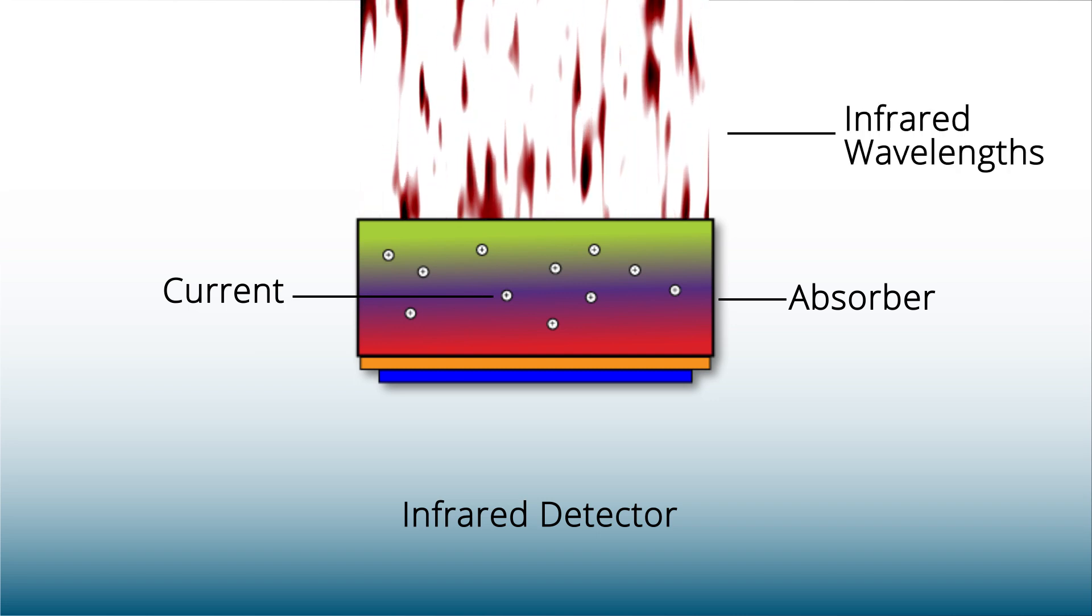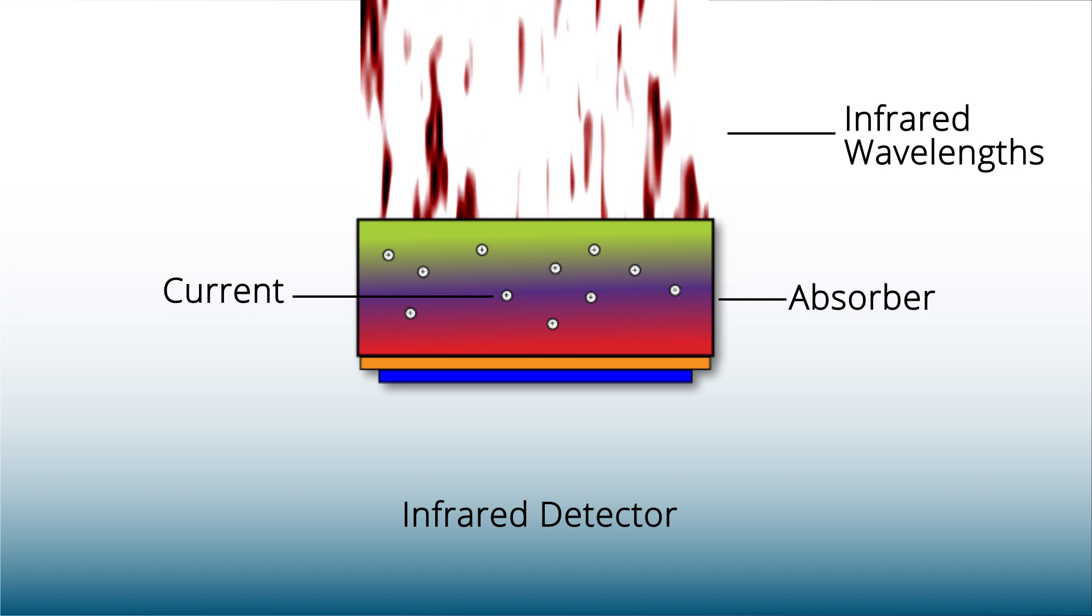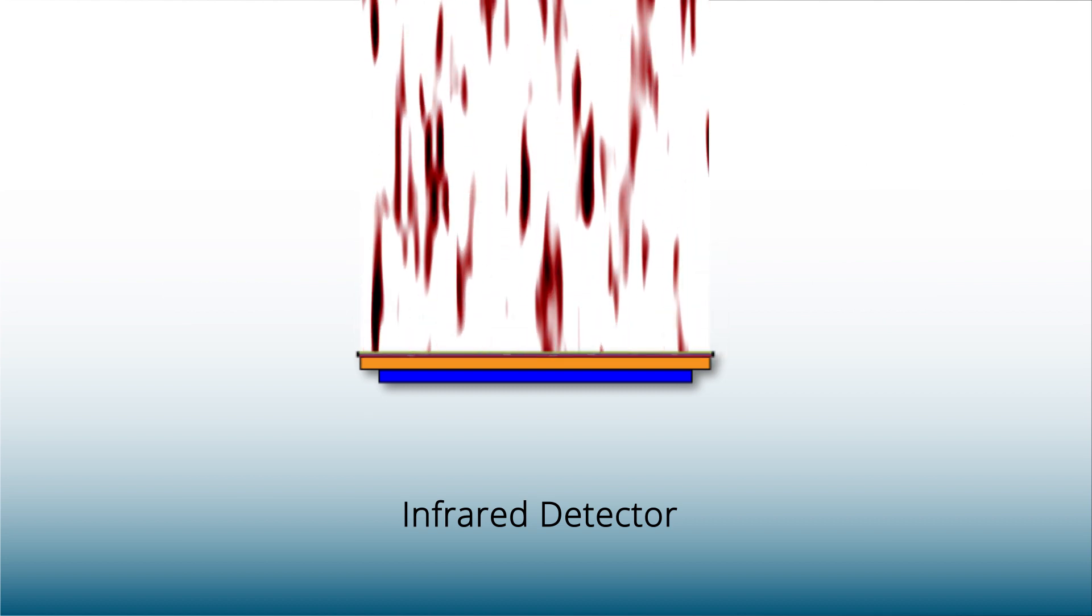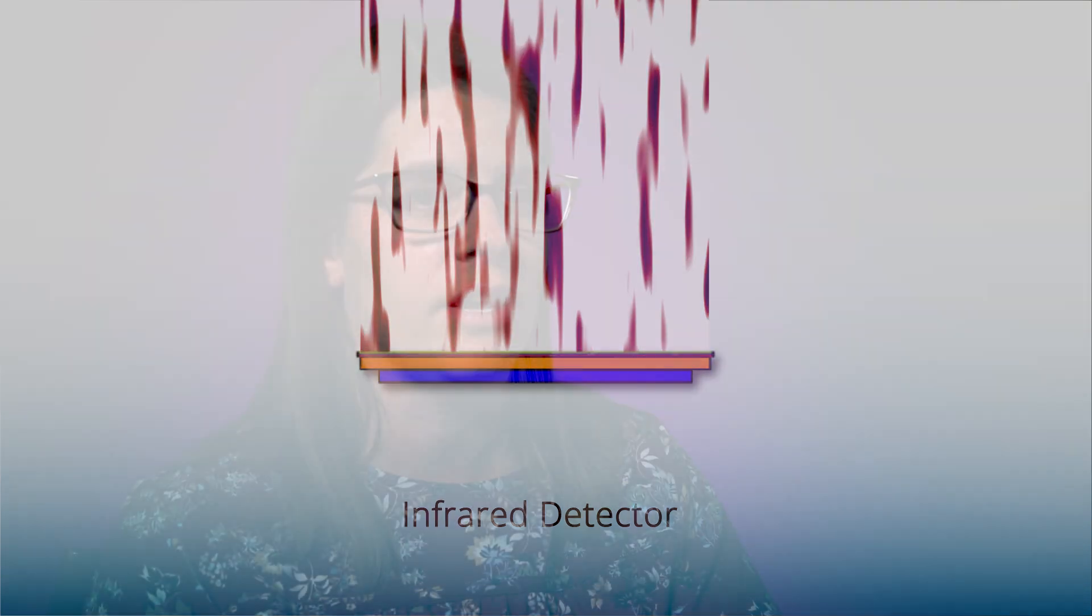The noise in detectors scales with the thickness of your absorber, and so by thinning this absorber to actually slightly shorter than the diffusion length, you are reducing the noise associated or the dark current associated with that detector.